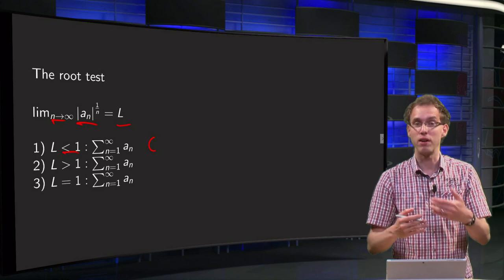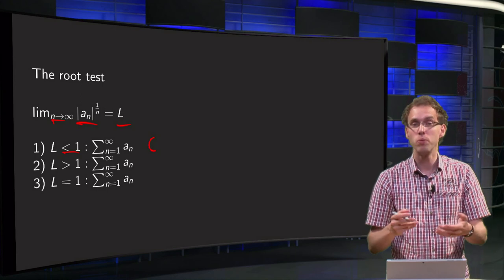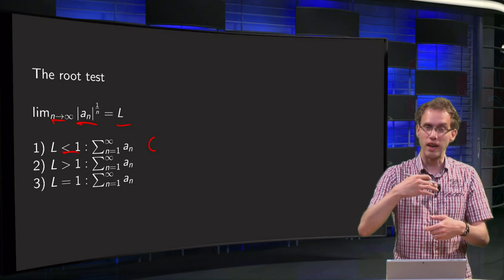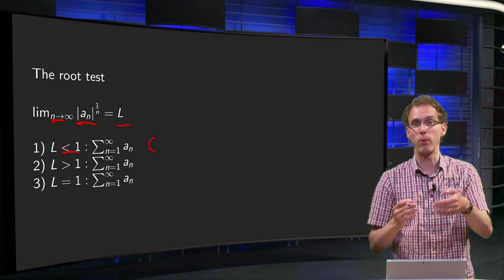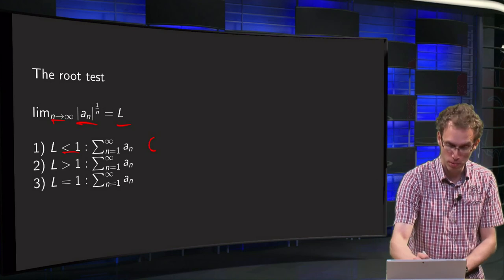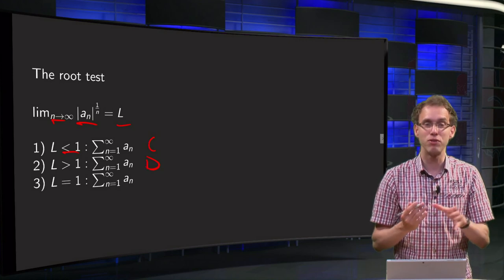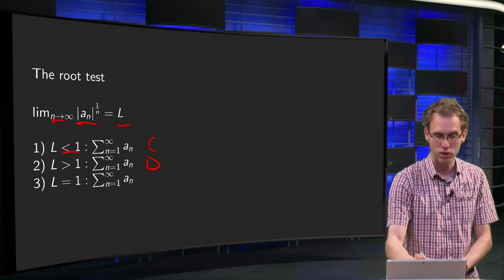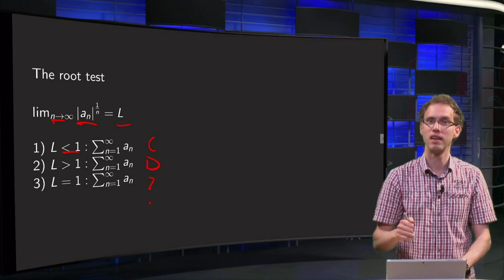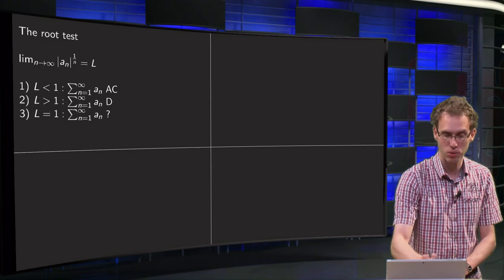On the other hand, if L is bigger than 1, then your terms in the end are going to behave like 2 to the power n. So they are going to blow up. So your series is probably going to diverge. And you guessed it already. If L equals 1, then you are in between, so you probably won't know what's going to happen. Let's see whether this is true and why this is true.